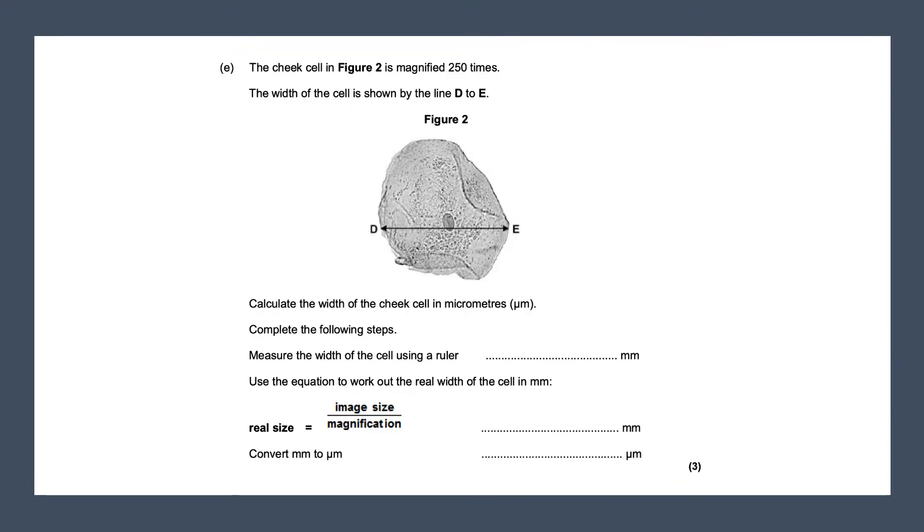Next, the cheek cell in figure 2 is magnified 250 times. The width of the cell is shown by line D to E. This line over here. Calculate the width of the cheek cell in micrometers. Complete the following steps. Measure the width of the cell using a ruler. Be careful of your units here. It's asking for your units to be in millimeters. So your answer has to be in millimeters as well.